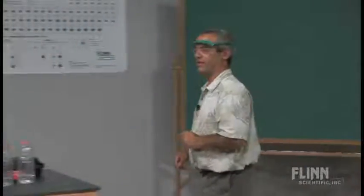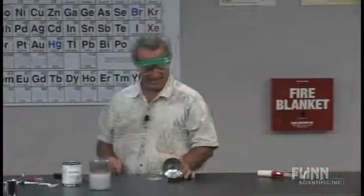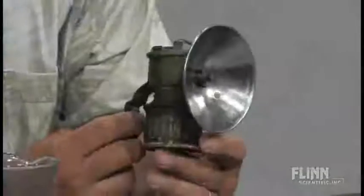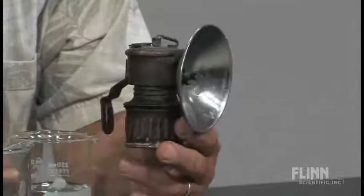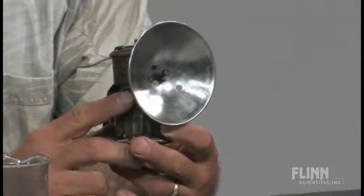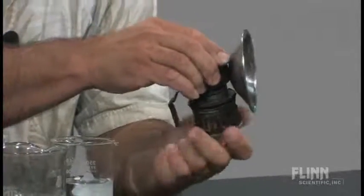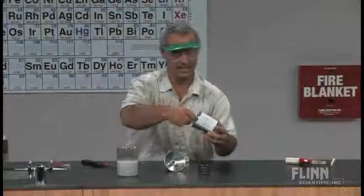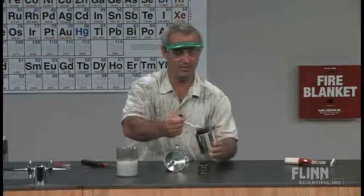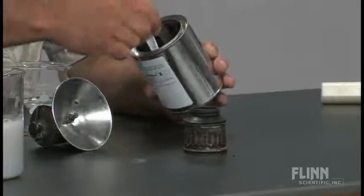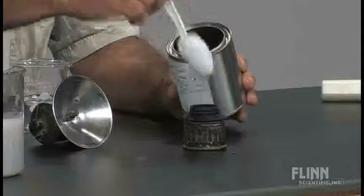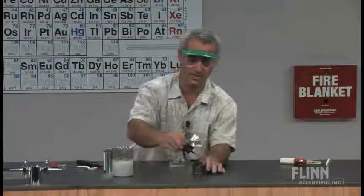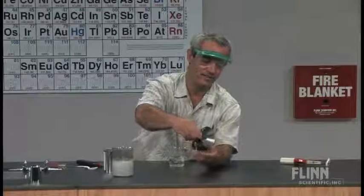I have a couple more demonstrations that go along with that. I had read about these but didn't know where to find one until I went on eBay and found this — an old carbide lamp. This is used by miners, and it's a really easy construction. Down here is the chamber in which you put the calcium carbide. This was used for years by miners before they had flashlights. I'll put some down in there. There's a little gasket here keeping it airtight, and I'll screw that on for a nice seal.